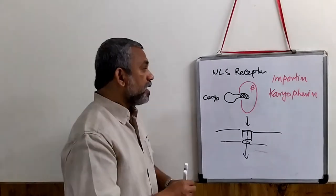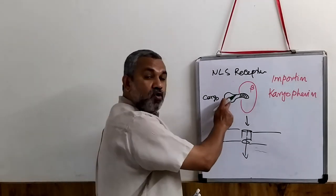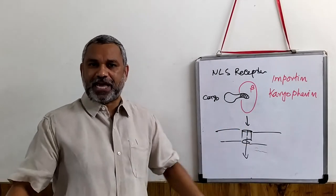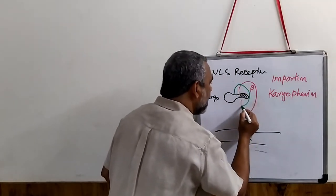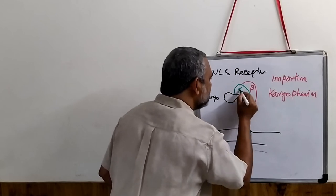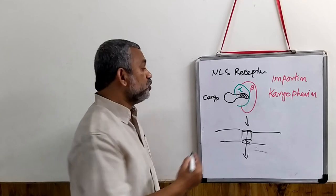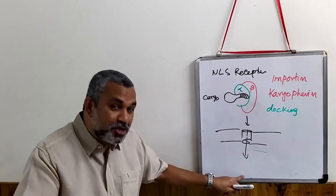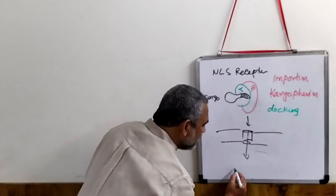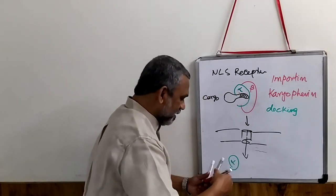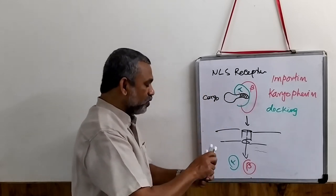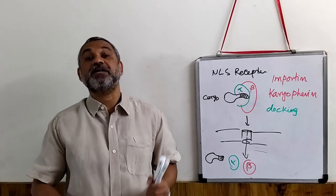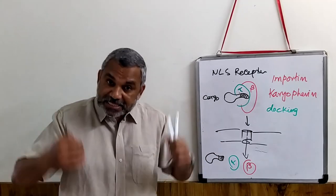The second possibility — the second kind of receptor — involves a cargo where in order to bind it with the importin, it needs a heterodimer. It also has an alpha region. The alpha region becomes a kind of a docking mechanism. So the entire unit has to dock and then is brought inside. Once it is brought inside, the alpha unit gets separated, the beta unit gets separated, and then the cargo also gets separated. The cargo is released. This is another kind of NLS receptor used for transporting proteins inside the nucleus.